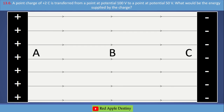Now consider two oppositely charged plates. Electric field lines emerge from the positive plate and terminate at the negative plate. Near the positive charge, the electric potential is more; farther away, the electric potential is less.